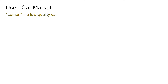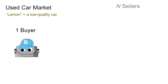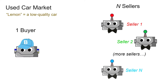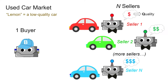The Market for Lemons is a used car market, where 'lemon' is slang for a low quality car. In this market, we have one buyer and n number of sellers. Each seller has their own car that they wish to sell to the buyer, as well as a vague perception of how much each of their cars is worth. The buyer, on the other hand, has no idea about how much any one given car is worth.